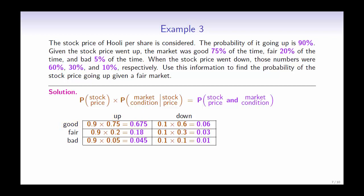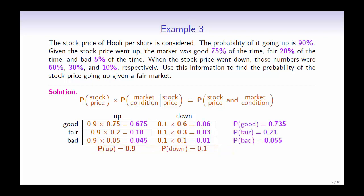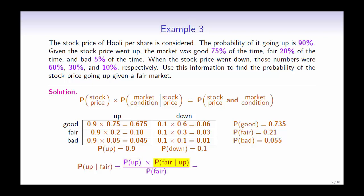If we add up the columns, they should sum to the probability of the stock price going up and down — adding the two should give you one. If we add up the rows, we get the probability of each market condition: the probability of a good market is 73.5%, a fair market is 21%, and a bad market is 5.5%, and these should also sum to 1. Now we can use the formula to calculate the posterior probability. The probability of the stock price going up given a fair market is 0.9 times 0.2 divided by 0.21. Therefore, the posterior probability is 85.7%.